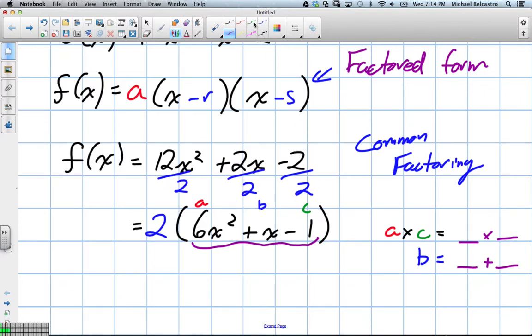Okay. So a times c in this case is 6. So we need two terms that multiply to 6. And the b term in the middle is just 1. They both have to add to 1. Okay. Now we already know this. And technically, actually, it's negative 6 in this case, right? And positive 1. So keep that in mind.